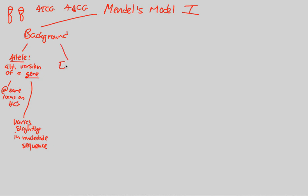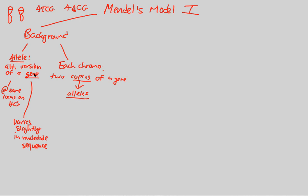To get a better idea of what Mendel meant by an allele, we look at each homologous pair of chromosomes. We have 23 homologous pairs, giving us 46 total chromosomes. Each one has two copies of a gene. Because each one has two copies of a gene, we can now use the genetic term 'alleles' instead of 'copies.' Each chromosome has two alleles of every single gene.